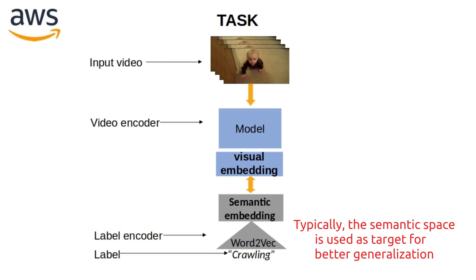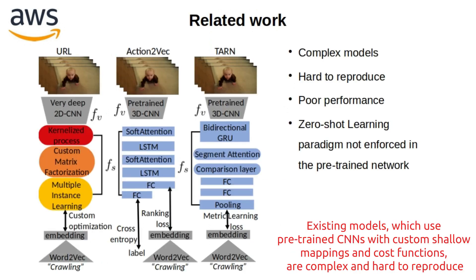Typically, the semantic space is used as a target for better generalization. Existing models, which use pre-trained features with custom shallow mappings and cost functions, are complex and hard to reproduce.